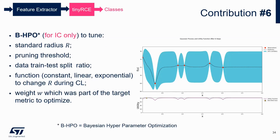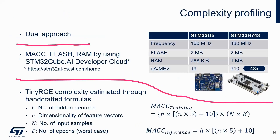For image classification only, we also applied Bayesian hyperparameter optimization on the ratio, the pruning threshold, the train/test split ratio, the function for graceful degradation of the hypersphere radius, and the weights, in order to tune these hyperparameters. For complexity profiling, we moved to microcontrollers: the STM32 U5 and U7, which are opposites in terms of power consumption at 19 microampere per megahertz and 900 microampere per megahertz. We used the developer cloud to automatically profile the complexity, cross-checking with analytical formulas considering the number of neurons in the hidden layer of TinyRCE, the number of multiply-and-accumulate operations for each operation in the Softmax, and the feature extractor dimensionality.